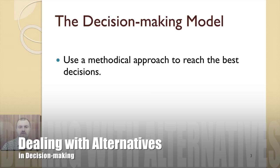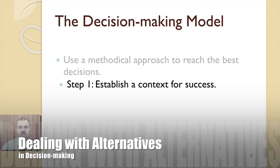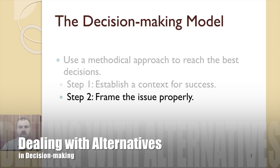A thorough decision-making model contains five steps. The first step involves ensuring you are in the right context — this may mean ensuring your team sets appropriate ground rules to encourage participation and deliberation, and that you have the right people on the team. The second step requires you to properly frame the issue: to define, understand, and put into context the issue at hand. If this isn't done, you are unlikely to make a suitable decision.